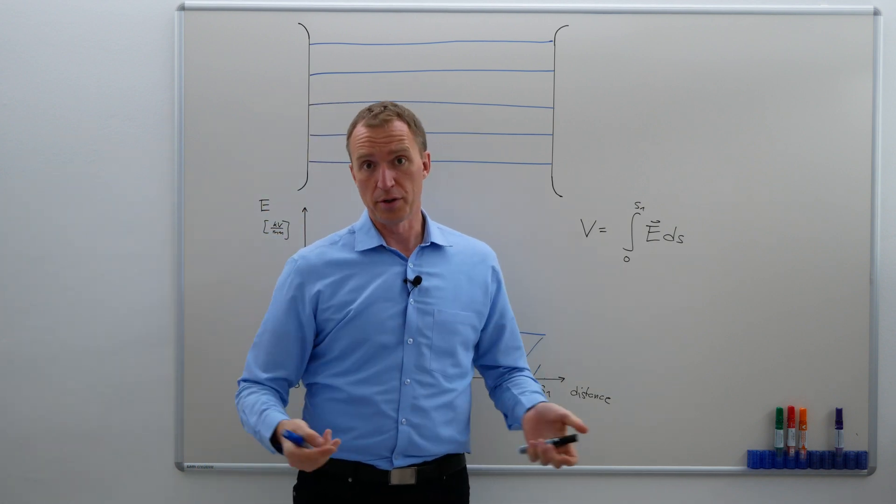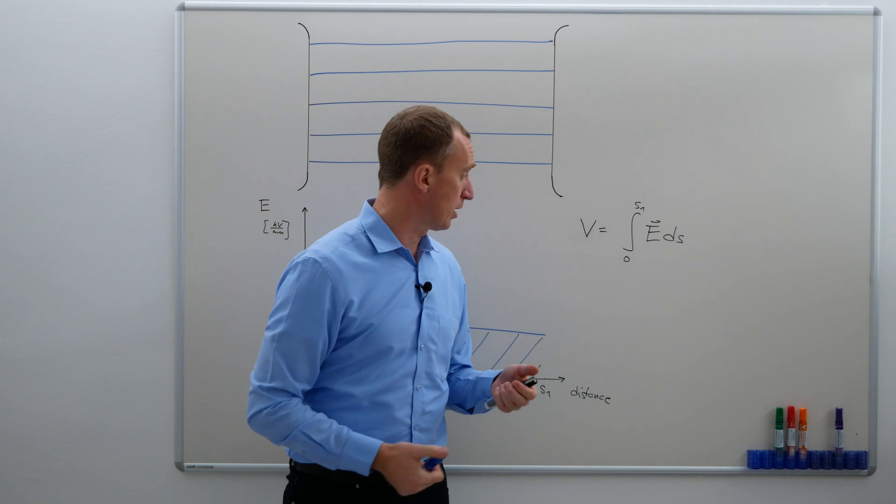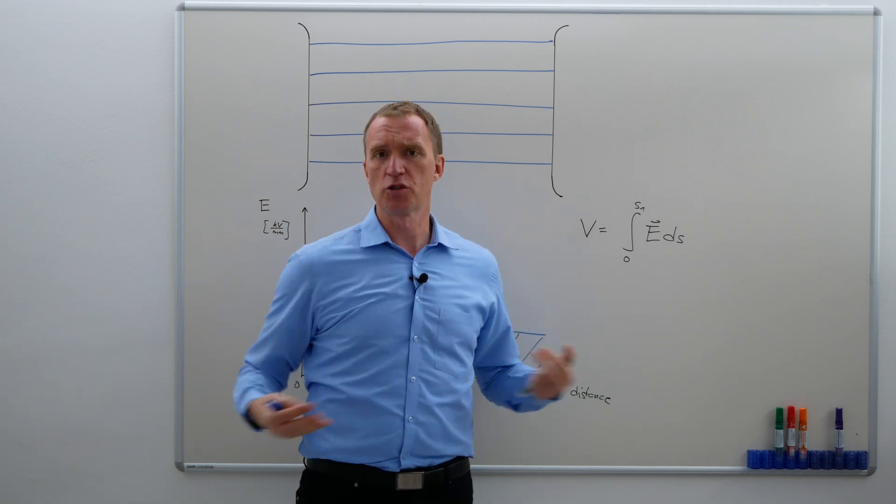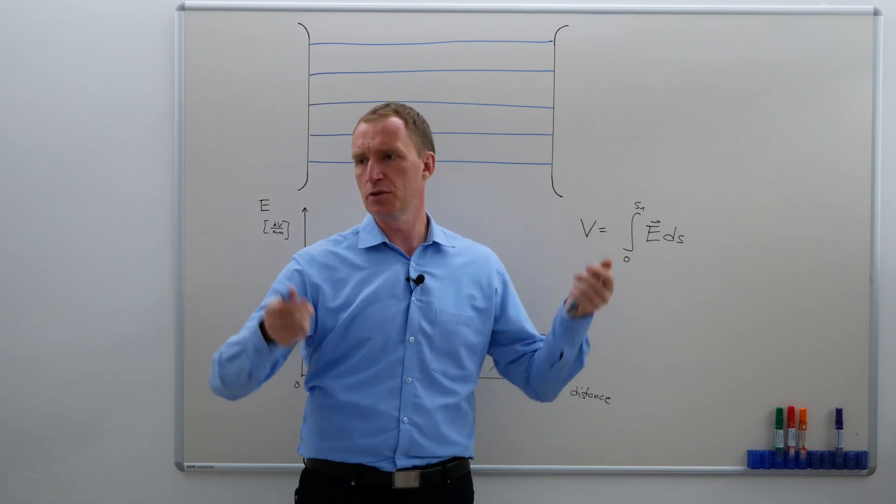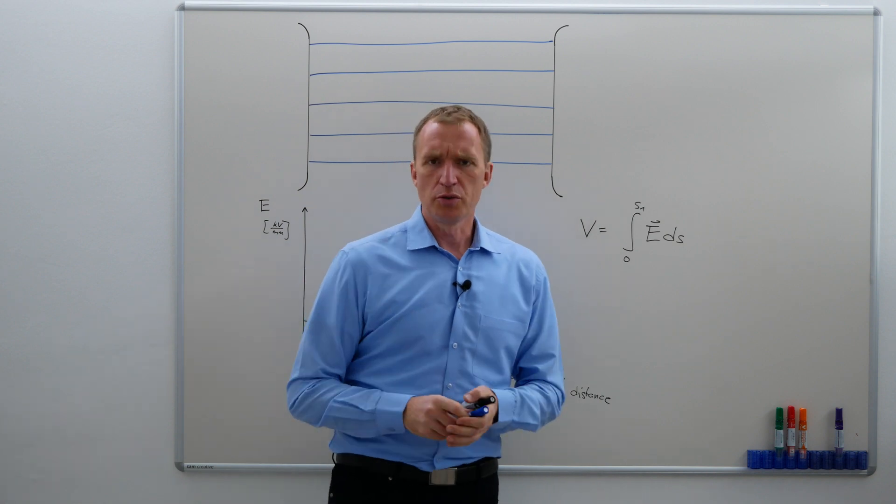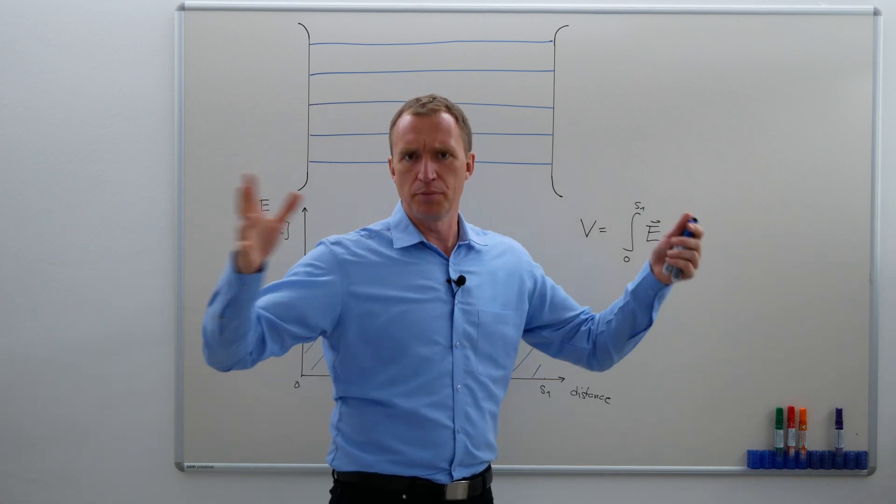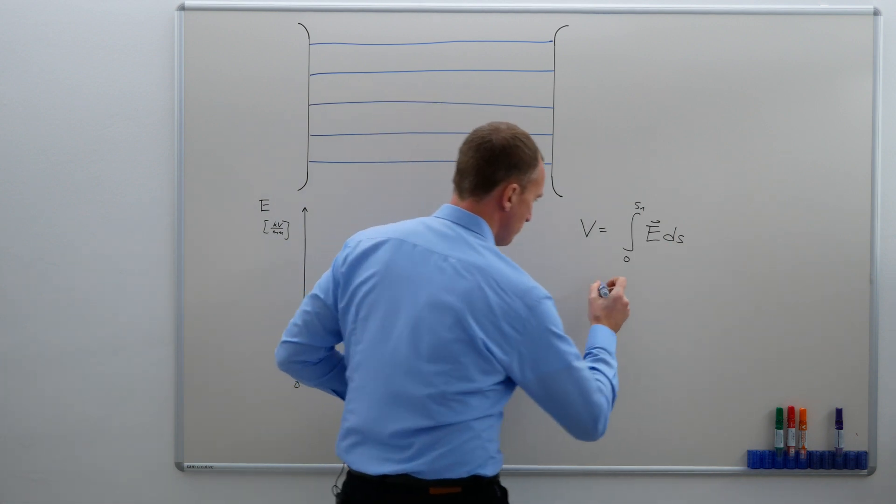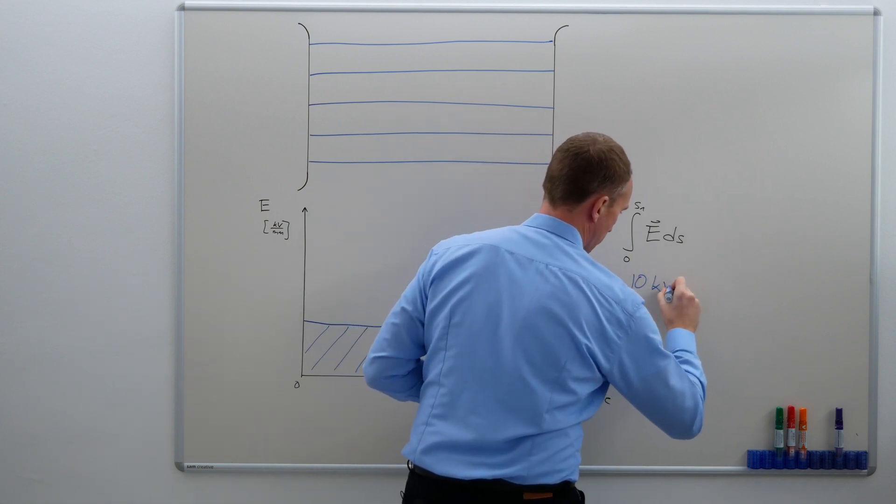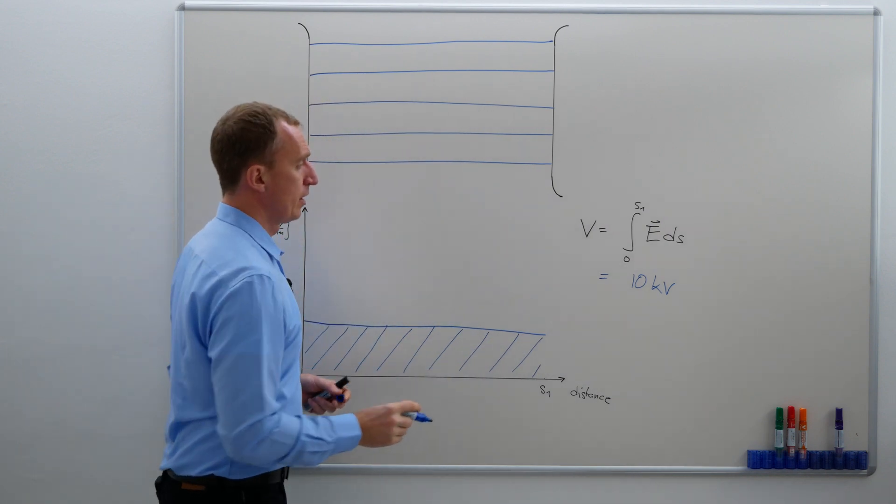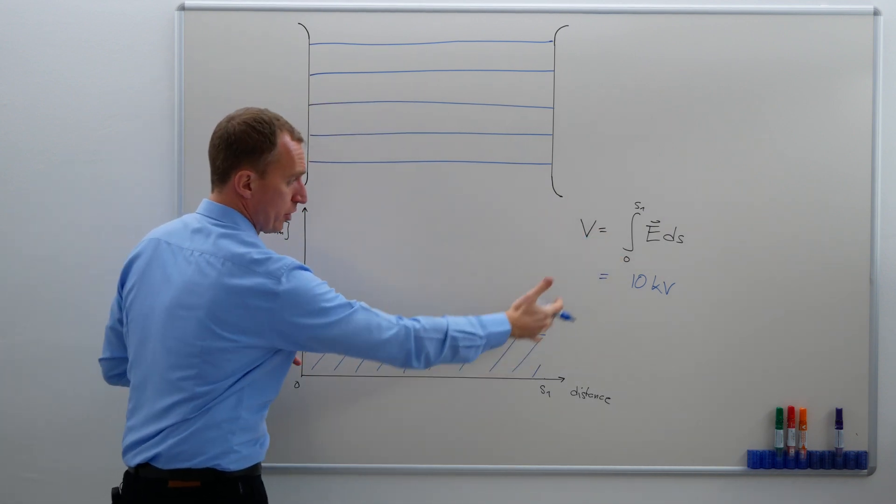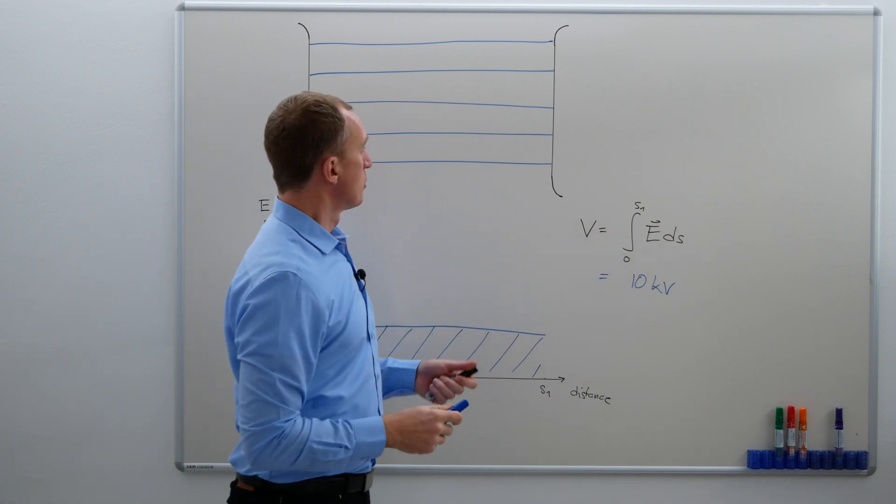For the sake of the argument, or for oversimplifying what we're doing here right now, let's use a number. Let's define how much volt this is. We pick an arbitrary number. I could use 17 or 12 or whatever. I'm just going to use 10. My voltage is 10 kV because I just solved this equation and the area below the curve equals 10 kV.